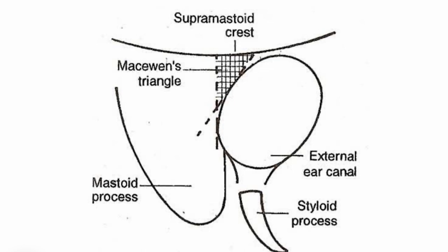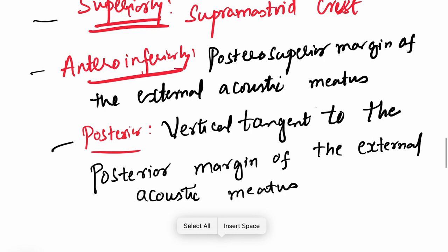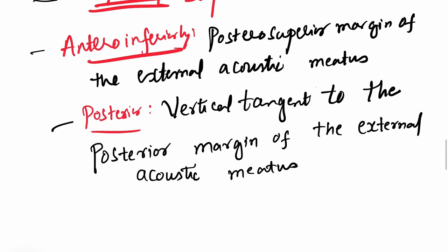Before going to clinical significance, let us also look at the line diagram. This is the Supramastoid crest, this is the anteroinferior margin — formed by the posterior superior margin of the external acoustic meatus — and this is the posterior margin, which is a vertical tangent to the posterior margin of the external acoustic meatus.